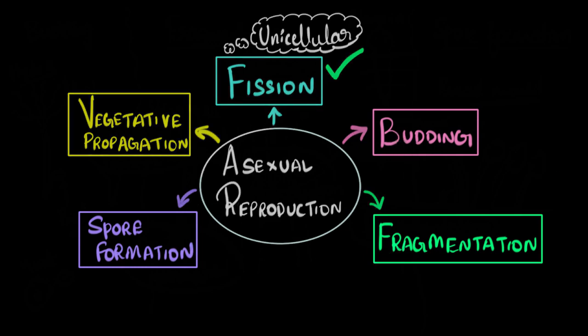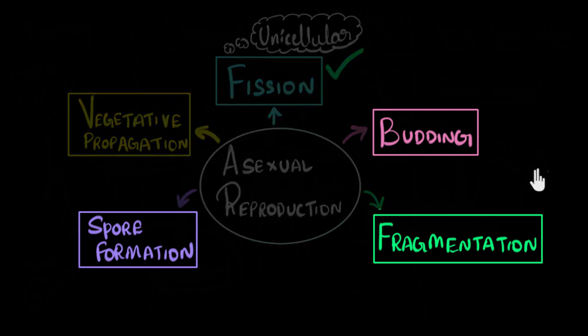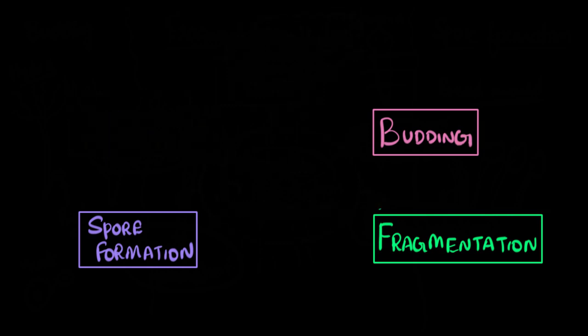Specifically, we're going to focus on these three: budding, fragmentation, and spore formation. In the next video, we'll talk about vegetative propagation in great detail. In a previous video, we talked about fission, binary and multiple fission. You can feel free to go and watch that if you missed it. So let's talk about these three, and we're going to start with budding.